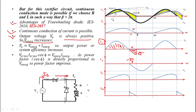Since P0 equals V0_average times i0_average, when V0_average increases, P0 also increases, meaning system efficiency improves. For power factor, since power factor is directly proportional to V0_average, as V0_average increases, the power factor also improves. These are the key advantages of using a freewheeling diode.